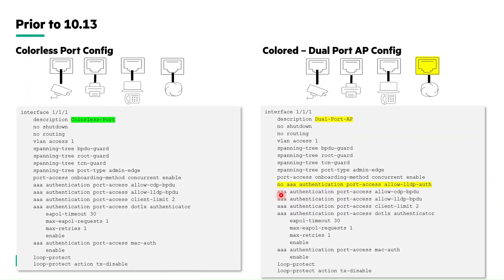To summarize the configuration prior to 10.13: colorless port configuration is used for client ports not connected to dual port APs. But for dual port AP connected ports, the configuration becomes colored — because an additional step of disabling LLDP authentication is required. Hence the dual port AP connected ports required a colored port configuration.